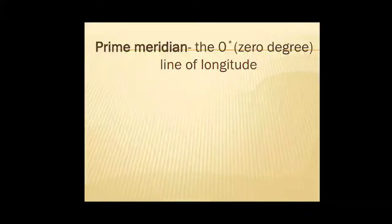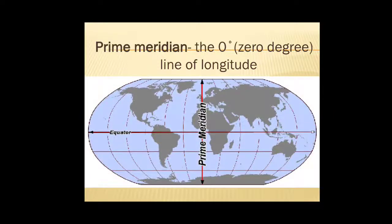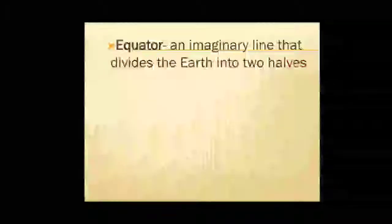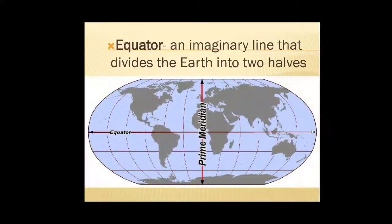The next one is prime meridian. It is the zero degree line of longitude. The center portion which divides the earth into west and east. Equator will divide the earth into northern and south. Equator is an imaginary line that divides earth into two halves.